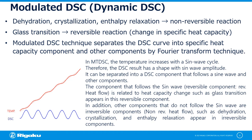In a modulated DSC, the temperature increases with a sine wave cycle. Therefore, the DSC curve has a shape with a sine wave-like amplitude and separates into a component that follows a sine wave and other components. The component that follows the sine wave will be the component related to the heat capacity, called the reversible component. Reversible heat flow and glass transition appear in this reversible component. The component that does not follow the sine wave is called the irreversible component or non-reversing heat flow. Reactions such as dehydration, crystallization, and enthalpy relaxation appear here.